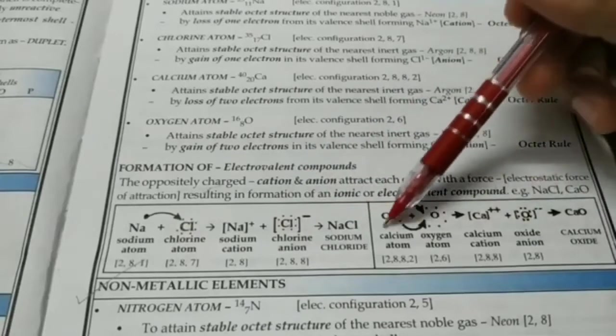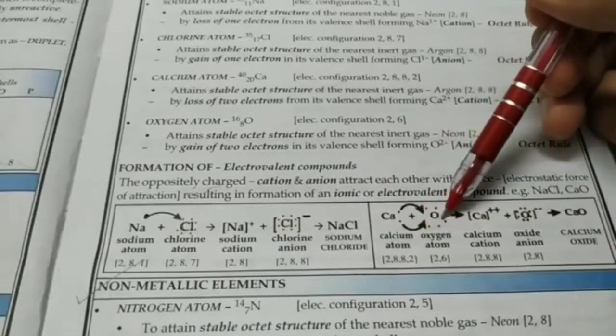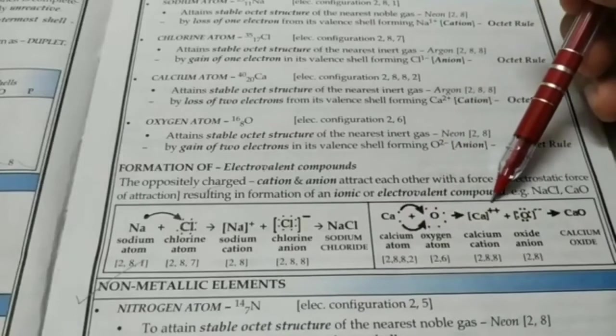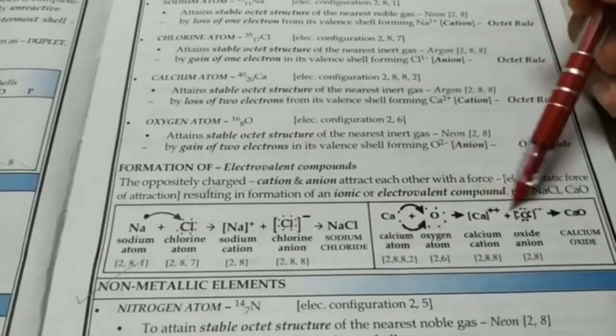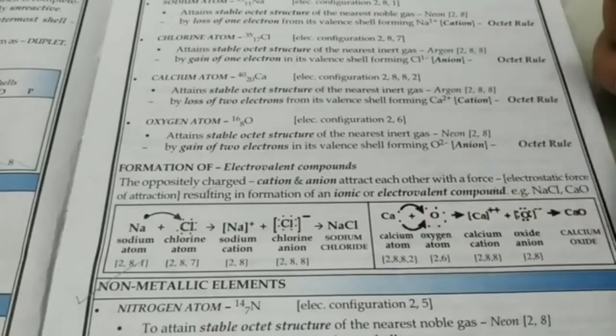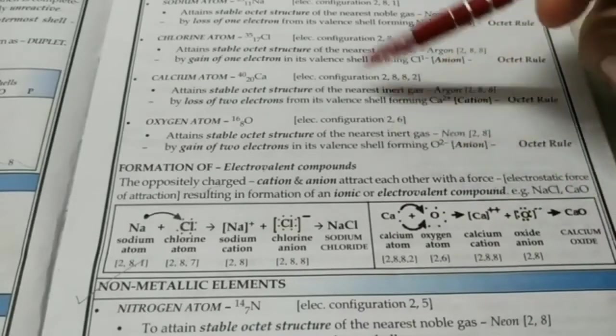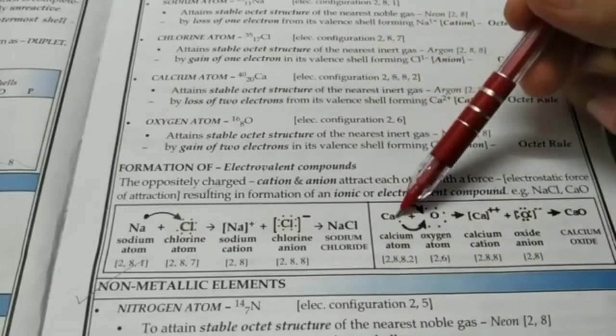Similarly, for calcium oxide, calcium loses two electrons, oxygen gains two electrons, calcium becomes a cation, oxide is an anion and they are attracted to form calcium oxide. Remember that ionic compounds are formed between metal and non-metal.